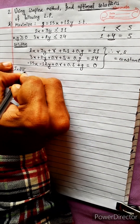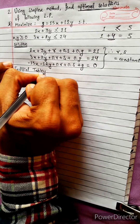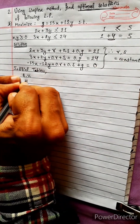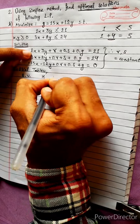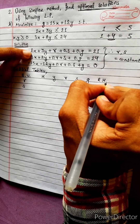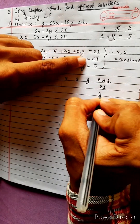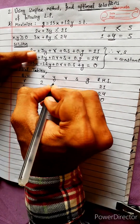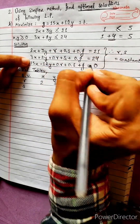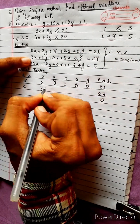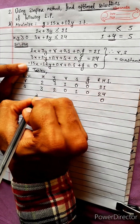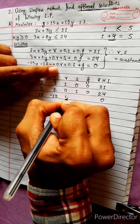First table — initial table. Basic variables: R, S. Columns: X, Y, R, S, G. Right-hand side: 21, 24, 0. Row values: 2, 3, 1r, 0s, 0g — G equals 0. Then 3x, 2y, 0r, 1s, 0g. Objective row: minus 15, minus 12, 0, 0, 1.